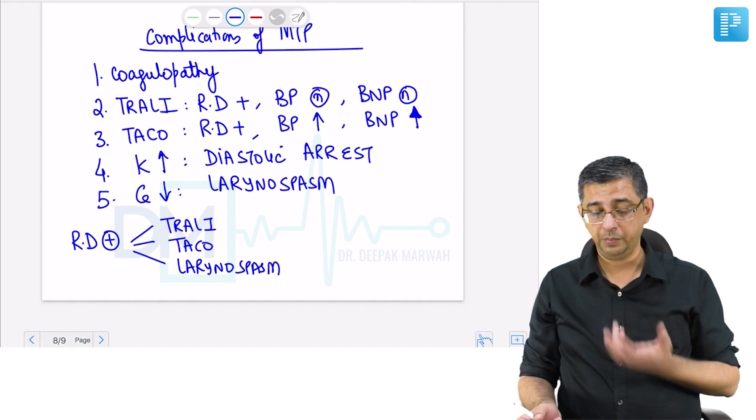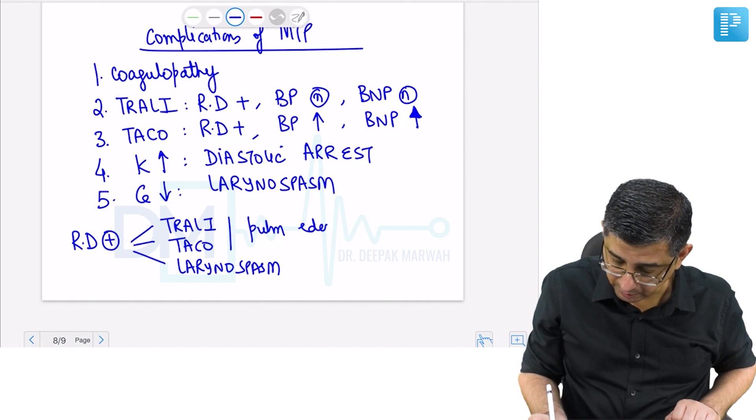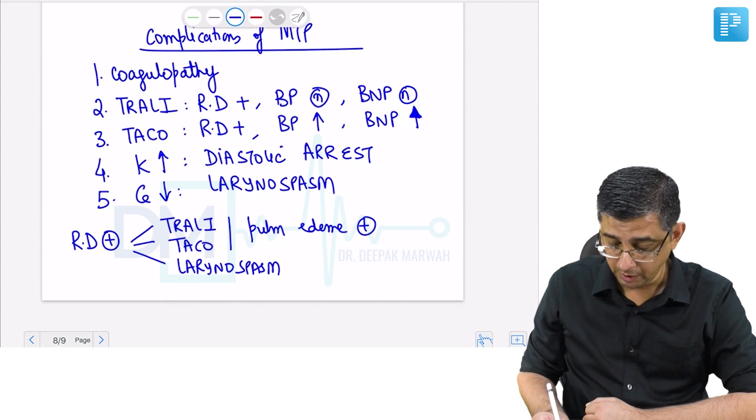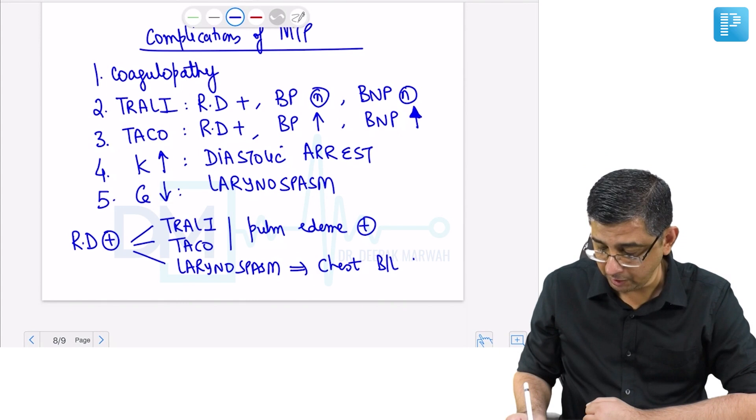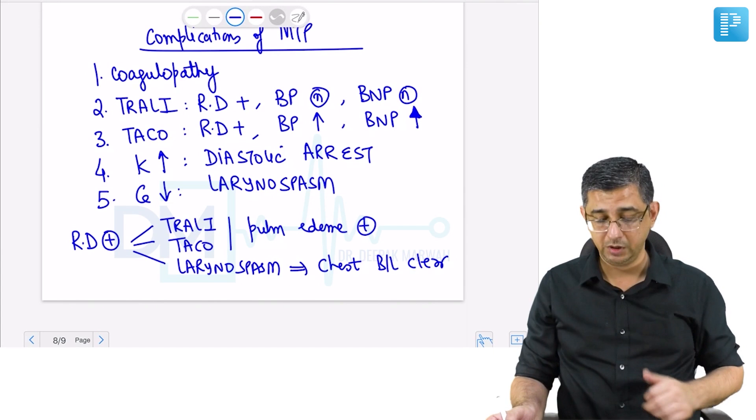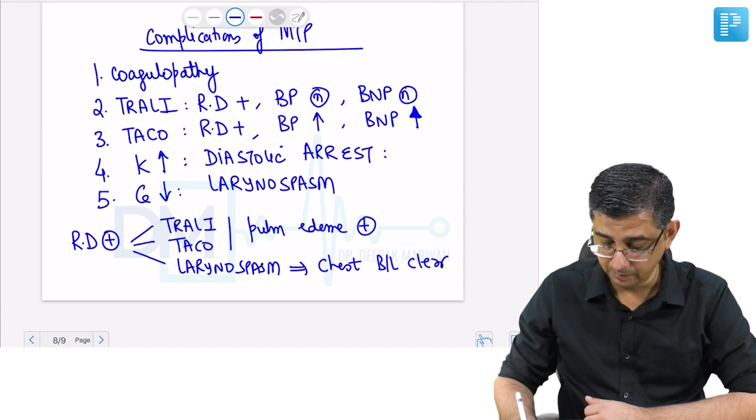Pulmonary edema will be a feature of TRALI and TACO. TRALI would be non-cardiogenic, TACO would be cardiogenic pulmonary edema. In laryngospasm, the chest will be bilaterally clear, but you might hear adventitious sounds from the upper airway because there is laryngospasm. If there's bradycardia, think in terms of hyperkalemia.